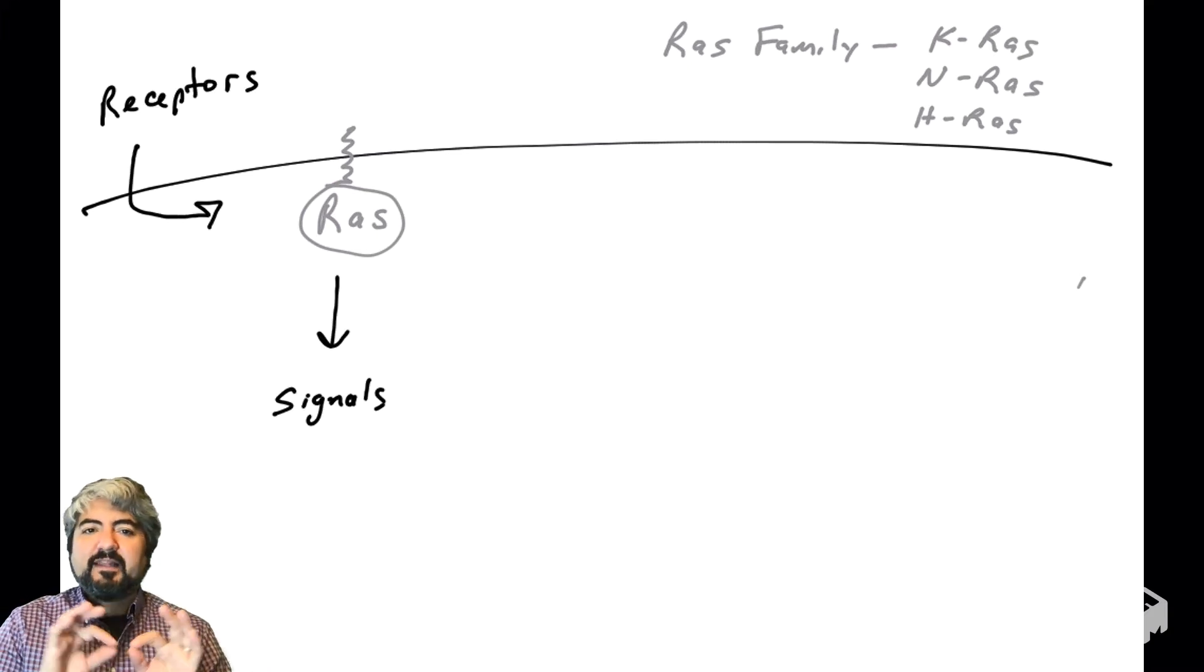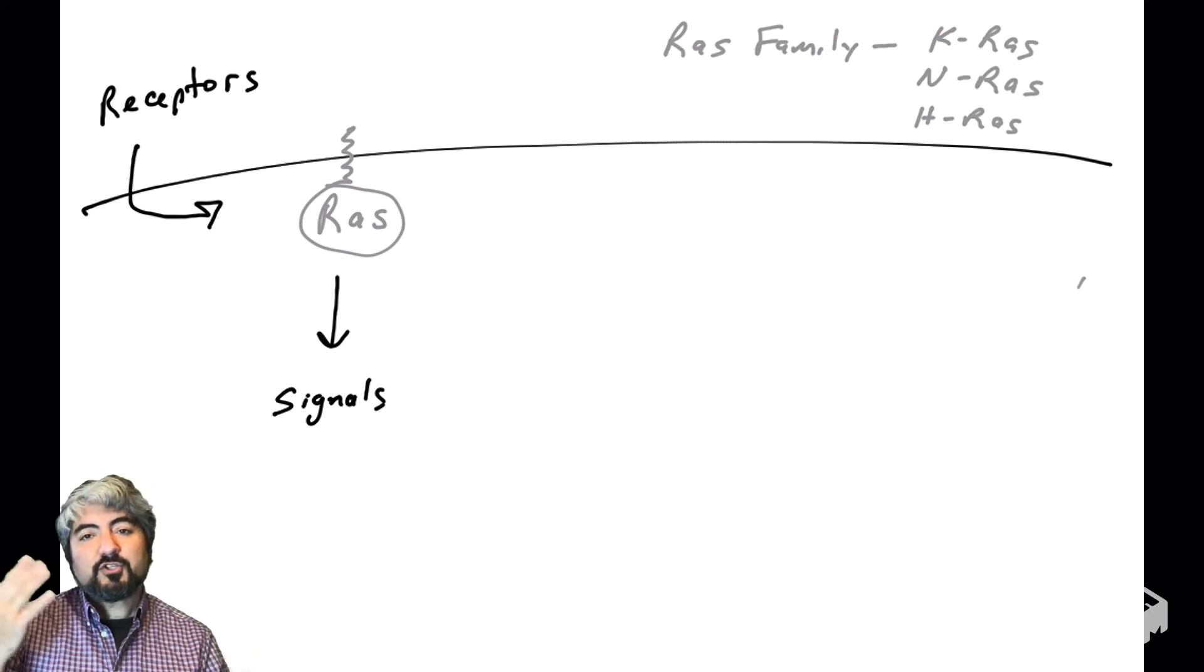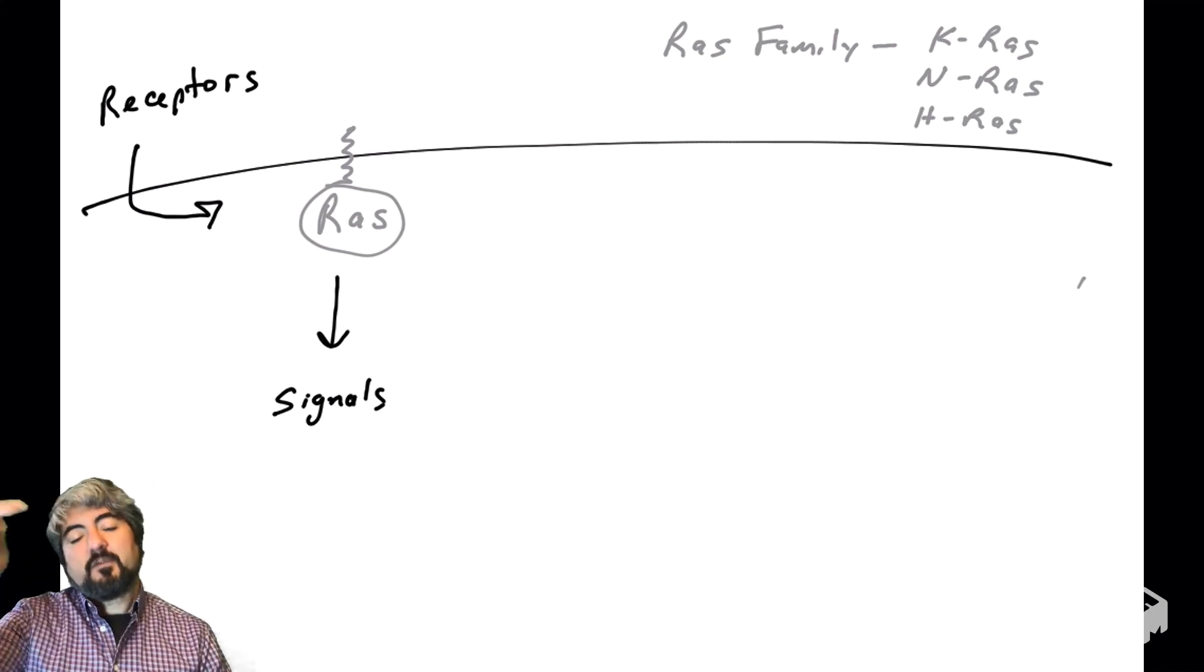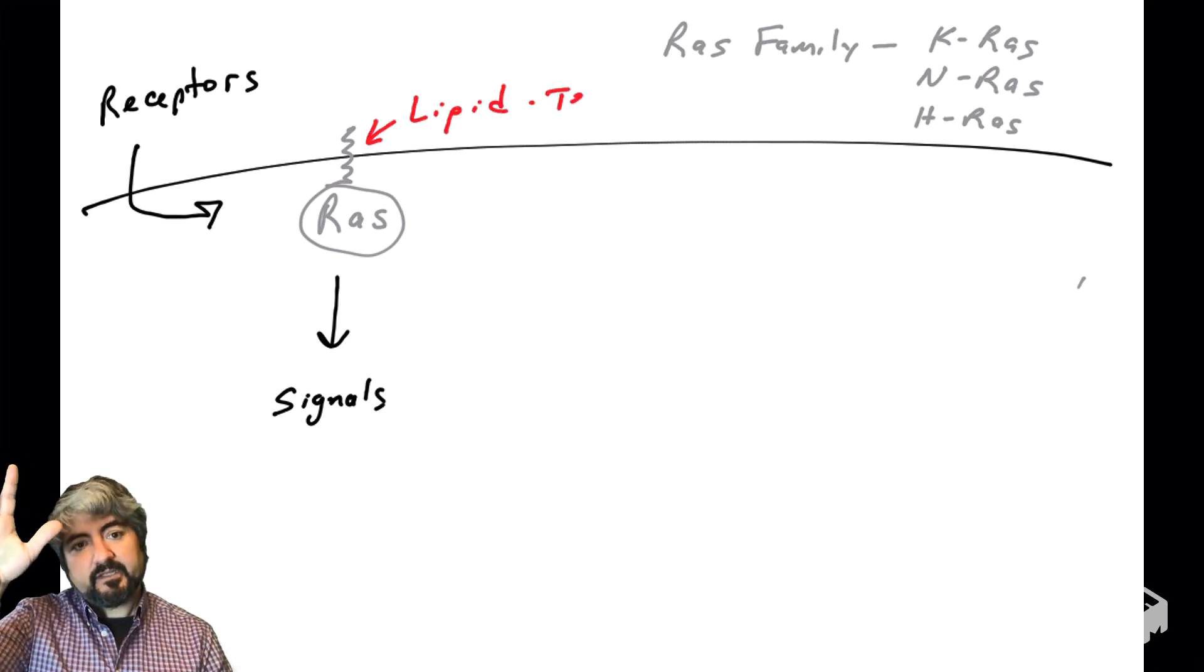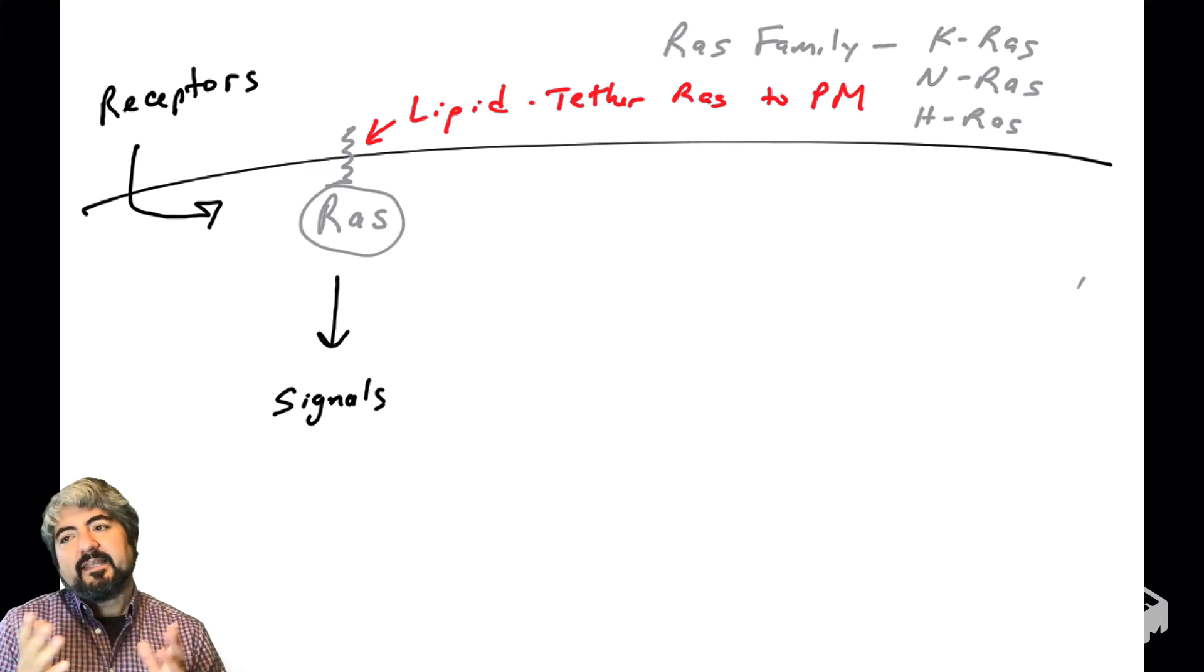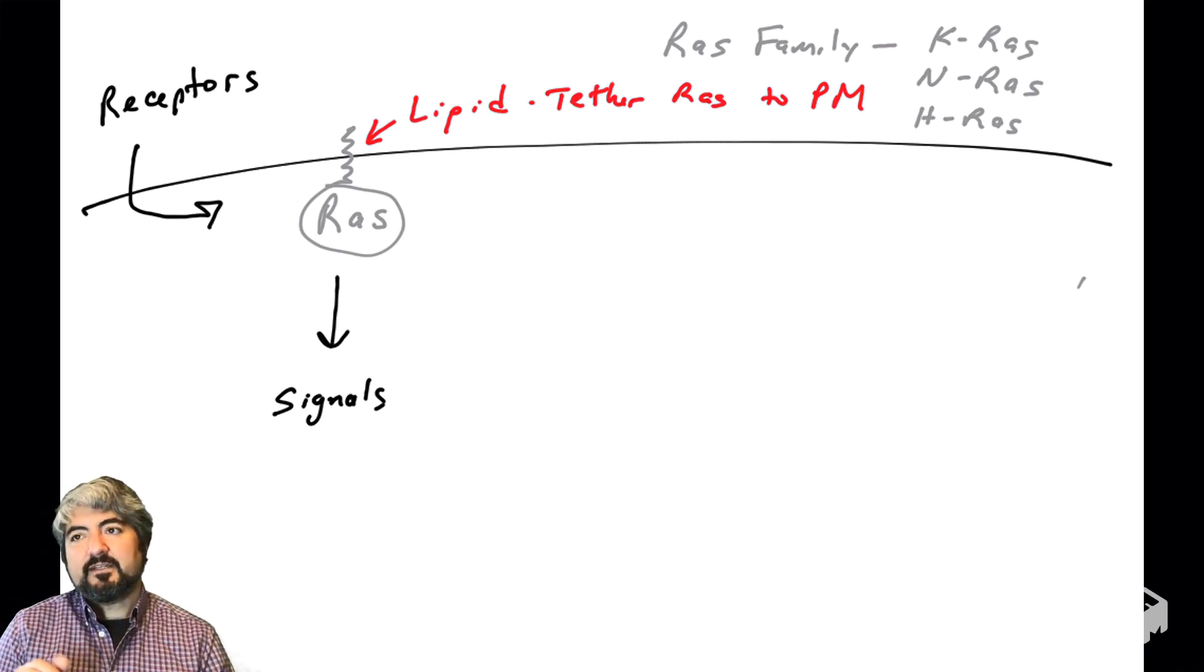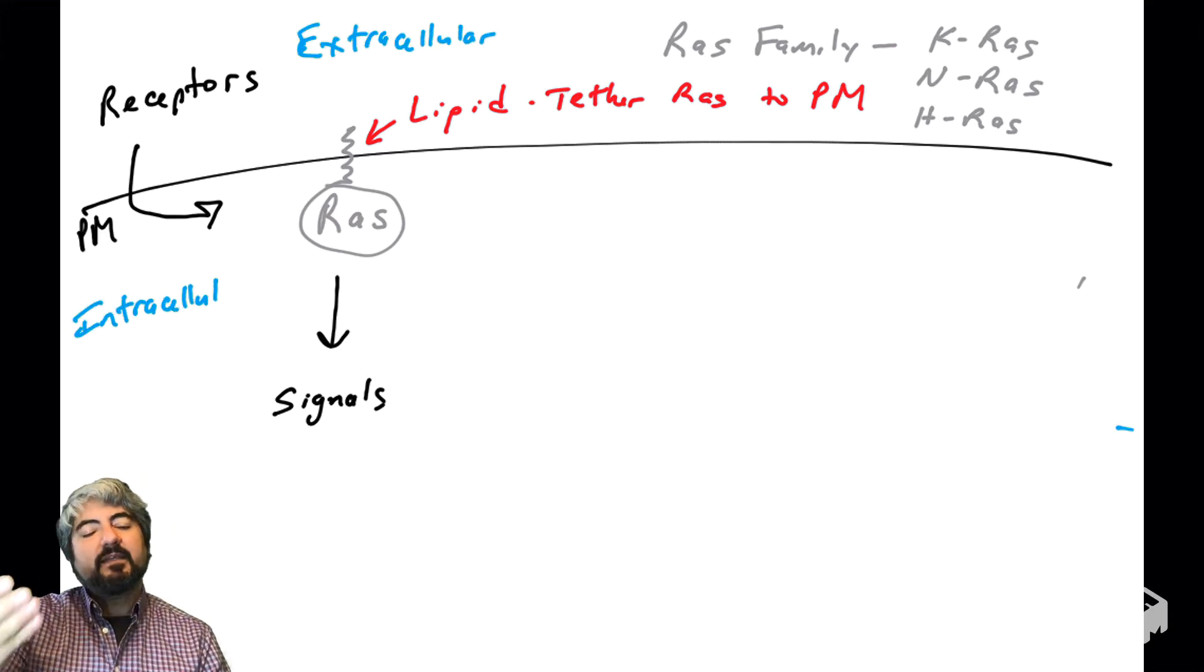I've drawn RAS in the plasma membrane because RAS plays a role in transmitting information from outside the cell, where receptors are picking up signals, to inside the cell into the cytosol. The reason RAS is able to do this is that RAS is tethered to the plasma membrane.